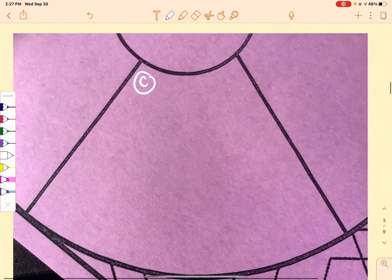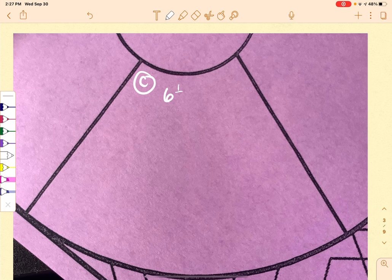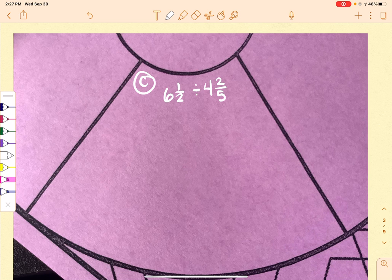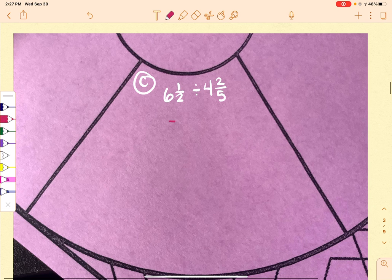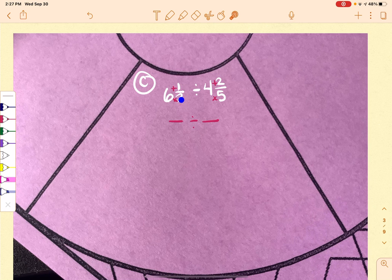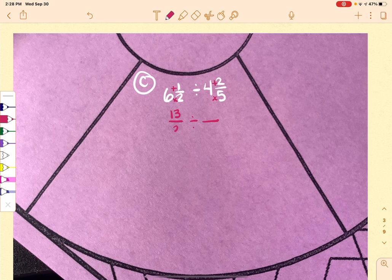So C. So I have 6 1⁄2 divided by 4 2⁄5. So now when I go to set this up, I know neither one of these is just a fraction. So I'm going to have to change both of these into improper. So 6 times 2 is 12 plus 1 is 13. So 13 over 2. 5 times 4 is 20 plus 2 is 22.